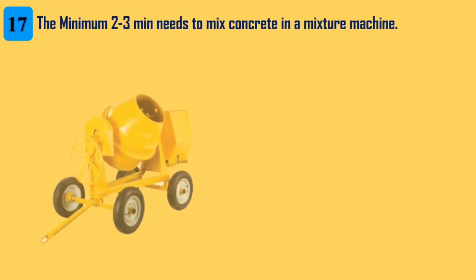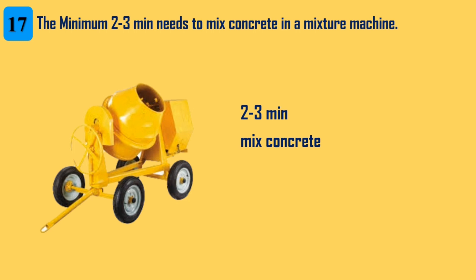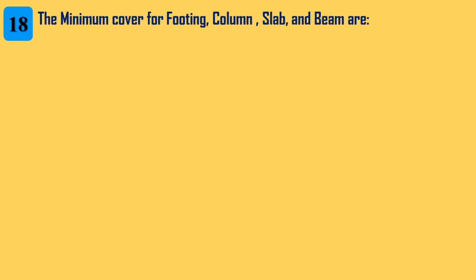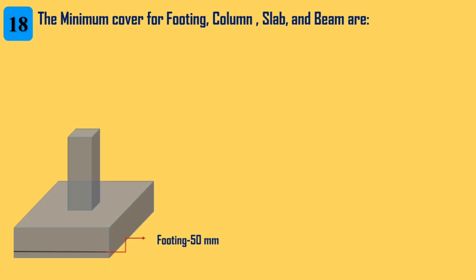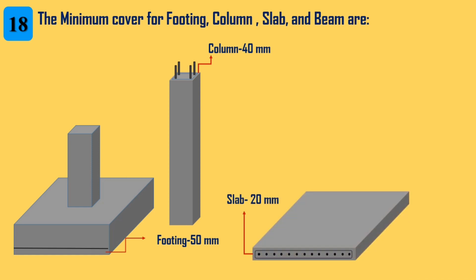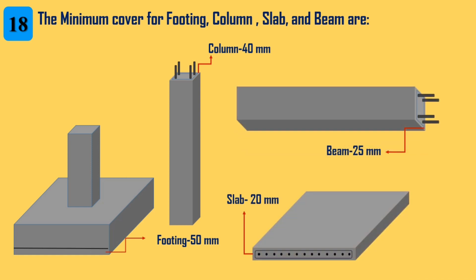17. A minimum of 2-3 minutes is needed to mix concrete in a mixer machine. 18. The minimum cover for footing is 50 mm, column is 40 mm, slab is 20 mm, and beam is 25 mm.